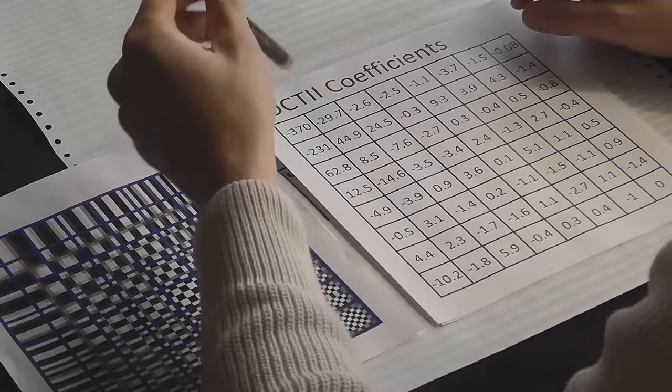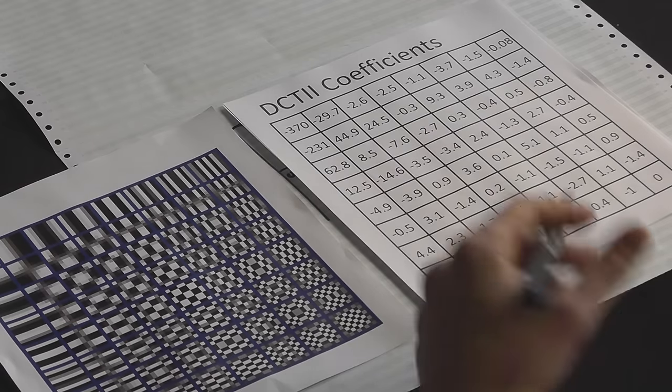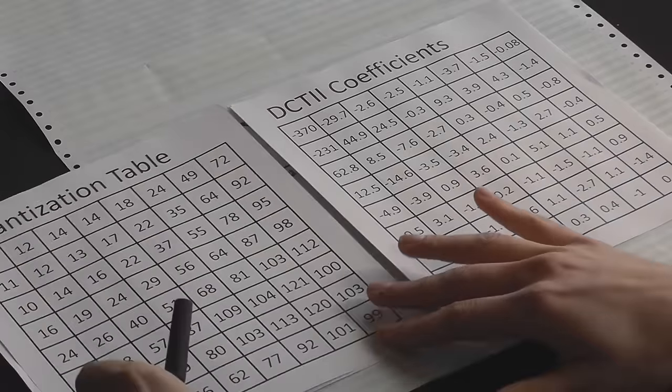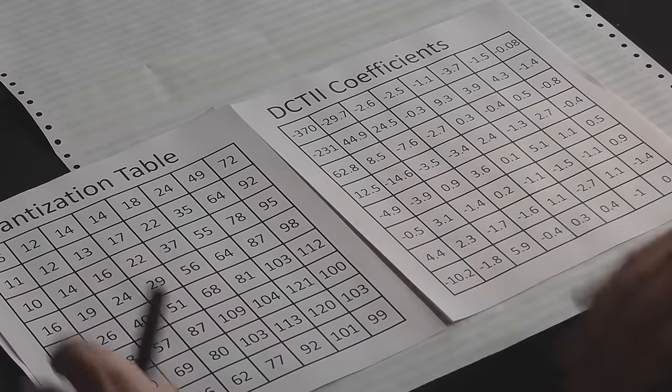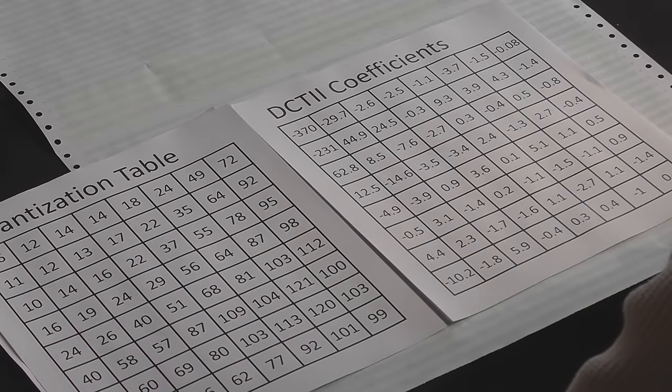The next step, after calculating our discrete cosine transform coefficients, is to basically try and remove the ones we don't want. We call the process of removing the high frequency data quantization. Hopefully, it'll be easier if I show you a quantization table.